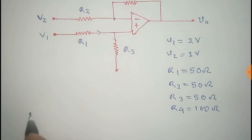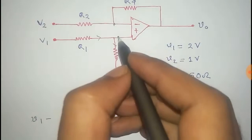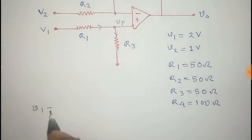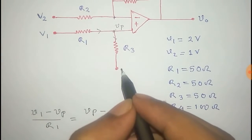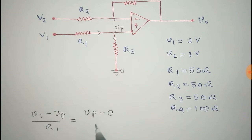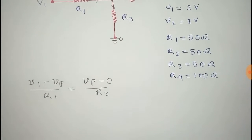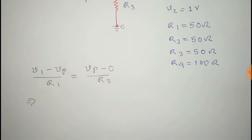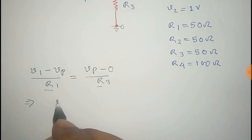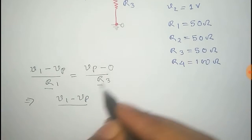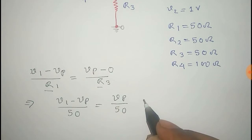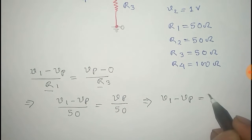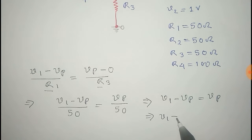The current will flow in this direction. For this loop, V1 minus the potential at this point Vp, divided by R1, equals Vp minus 0 divided by R3, since this point is grounded. Putting in the values: (V1 - Vp) / 50 = Vp / 50, which gives V1 - Vp = Vp, so V1 = 2·Vp, meaning Vp = V1 / 2.